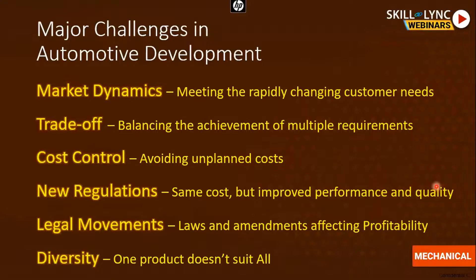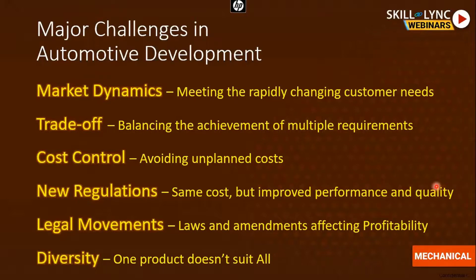Coming to the challenges of automobile development — they can be grouped into about six items. First is market dynamics. Customer mindsets are changing rapidly. Two years ago, a different headlamp style was liked; now cars like the Hyundai Creta and Venue have completely different design concepts but are still liked. A product planned with a headlamp shape from two years ago, if planned for 10 years, cannot be sold for the next eight years because customer requirements have changed. This rapidly changing customer need must be considered in product development planning.